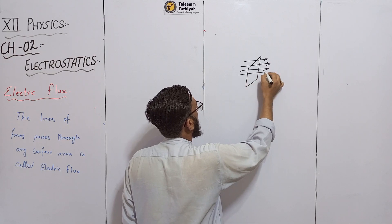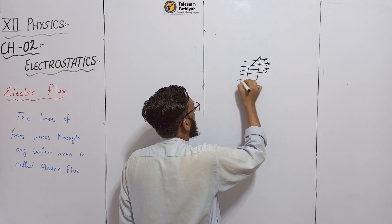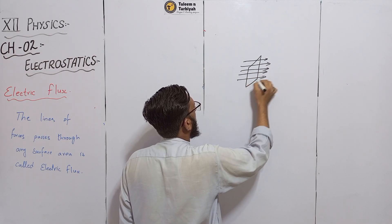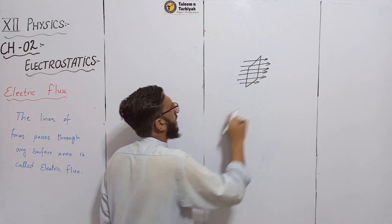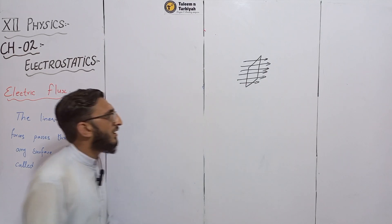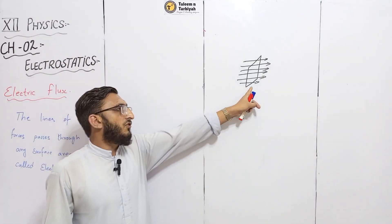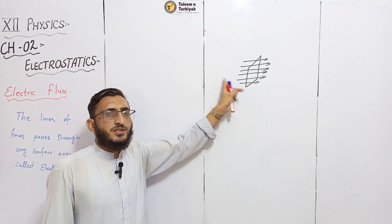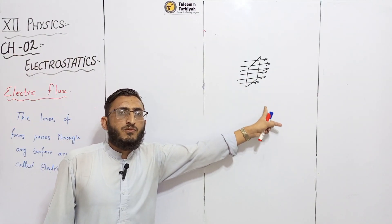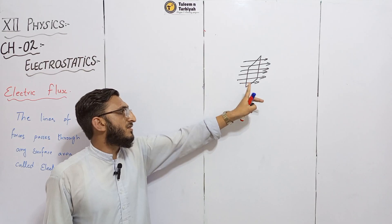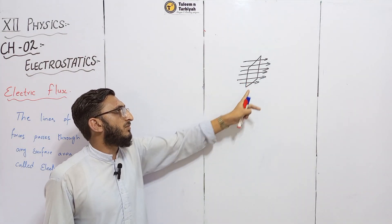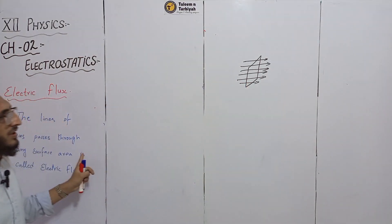This here is our area. It's an electric field! We can see the lines of forces passing through an area. What is the electric flux?